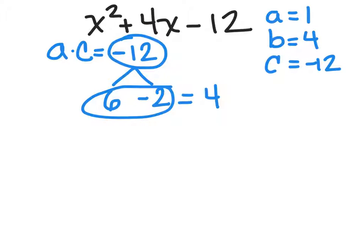So my factors are 6 and negative 2, meaning that my multiplication is going to be x plus 6, because that's my first factor, times x minus 2, because negative 2 is my second factor.